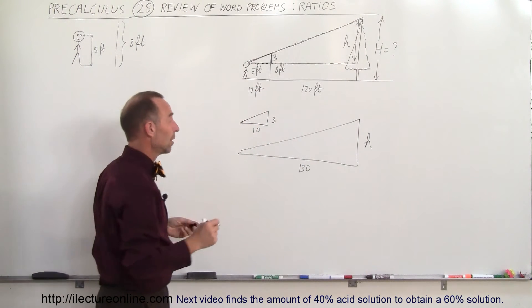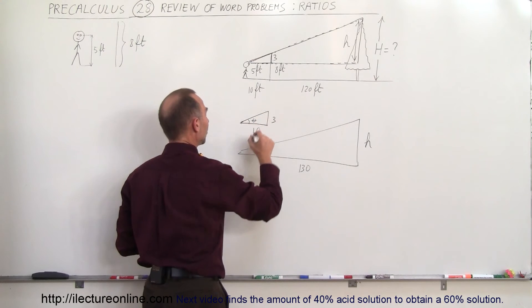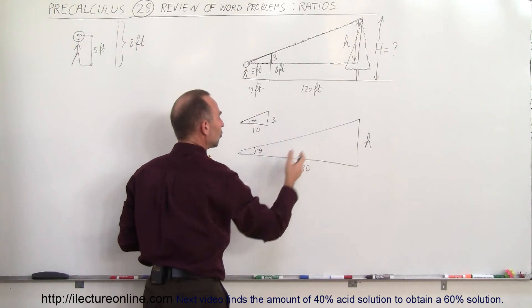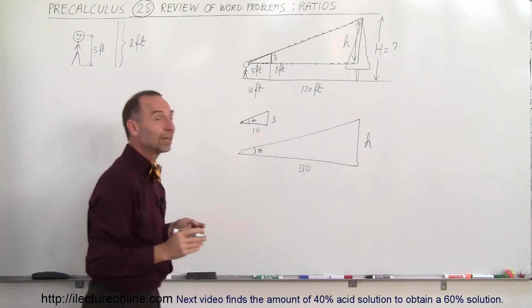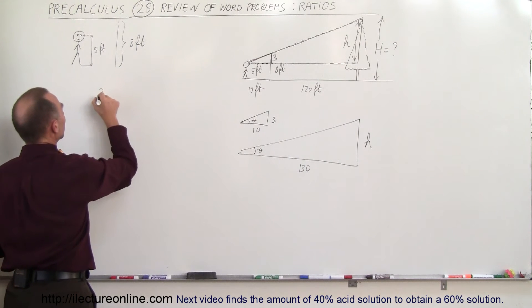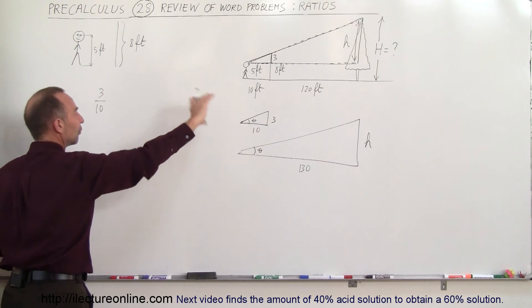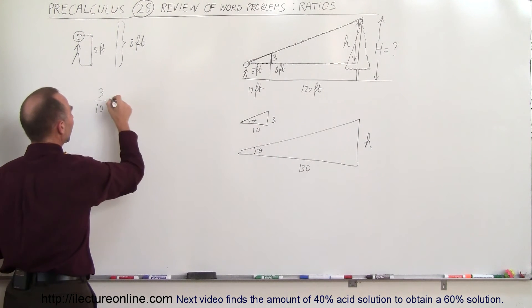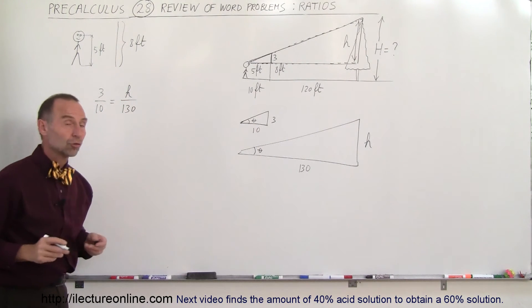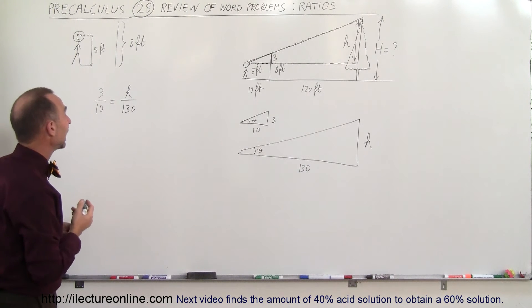So now we have two triangles where these angles are the same right here and the dimension ratios are the same. So therefore we can say that 3 divided by 10, the ratio of the vertical side divided by the horizontal side, must equal the vertical side divided by the horizontal side of the large triangle, and we can then solve this for h.